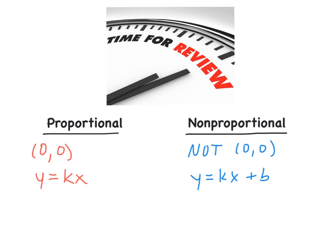Now for a quick review: things that are proportional — when you graph it, it must go through the point 0, 0, or the origin, and the equation we use is y equals kx. If it's non-proportional, it does not go through 0, 0, so the equation is y equals kx plus b, where b equals where it crosses on the y-intercept. Thank you.